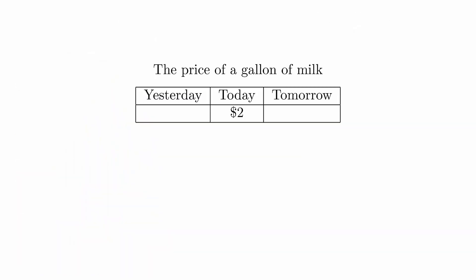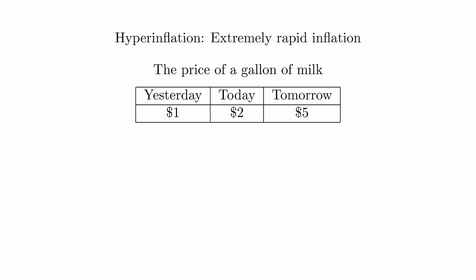But what if that didn't happen? Imagine if you went to the store and a gallon of milk cost $2, but it only cost $1 yesterday. And tomorrow, the cost is expected to rise to $5. Although this may sound absurd, this has actually happened many times in history. This is known as hyperinflation.